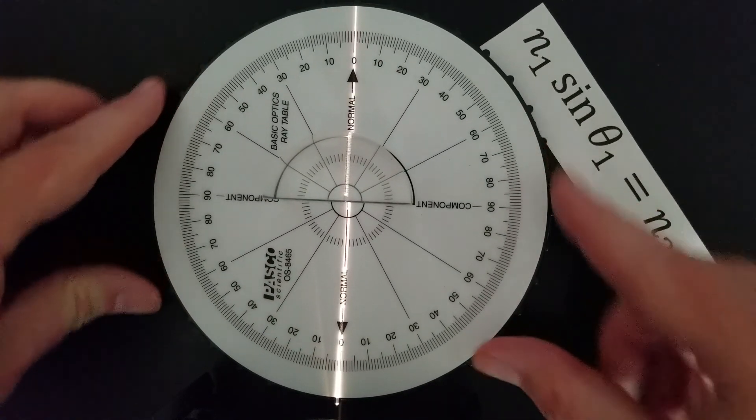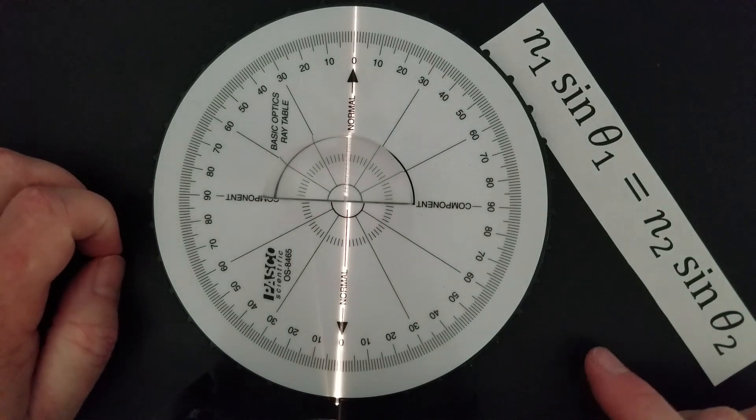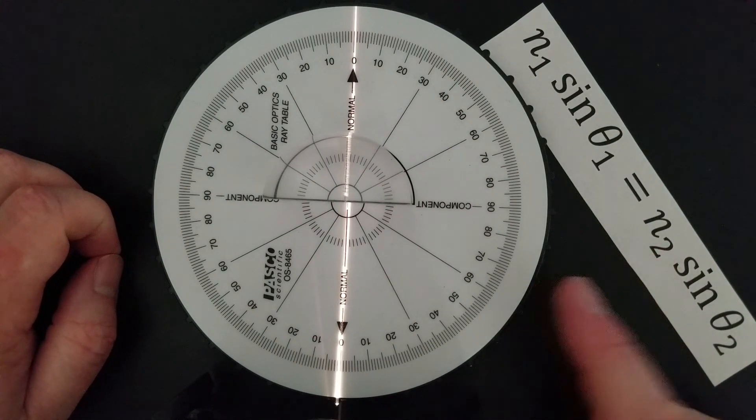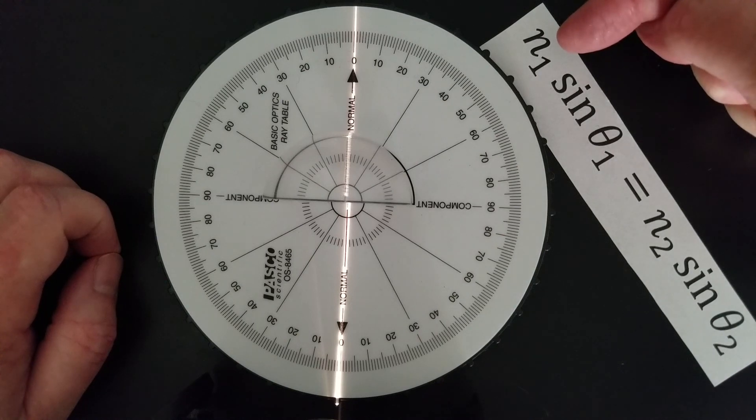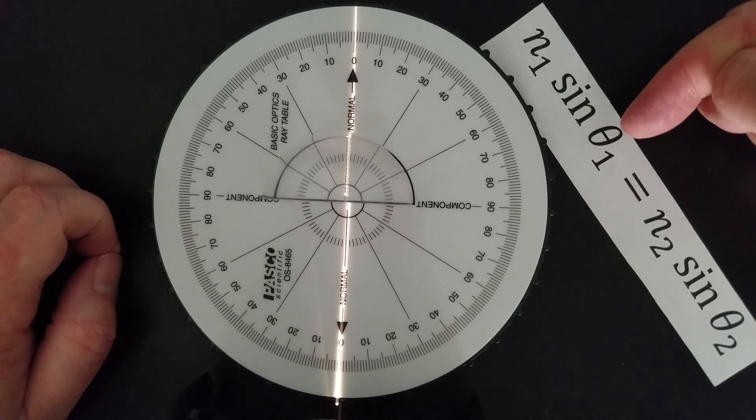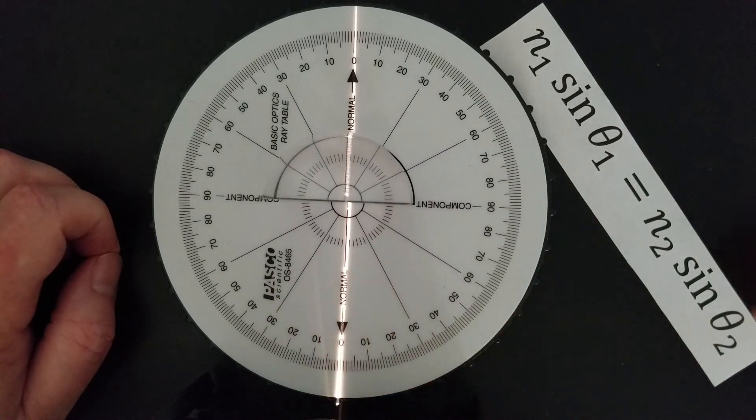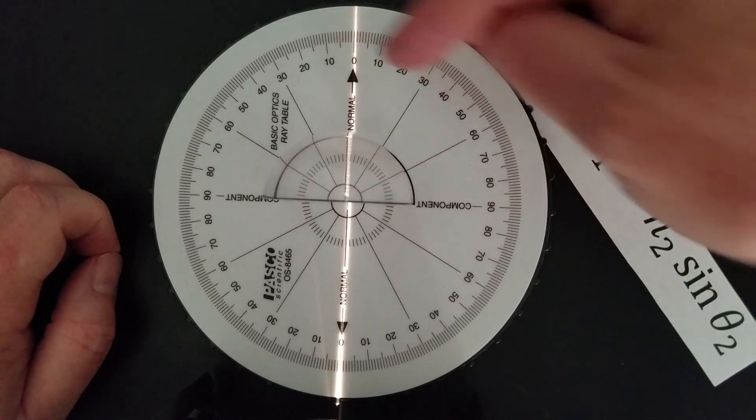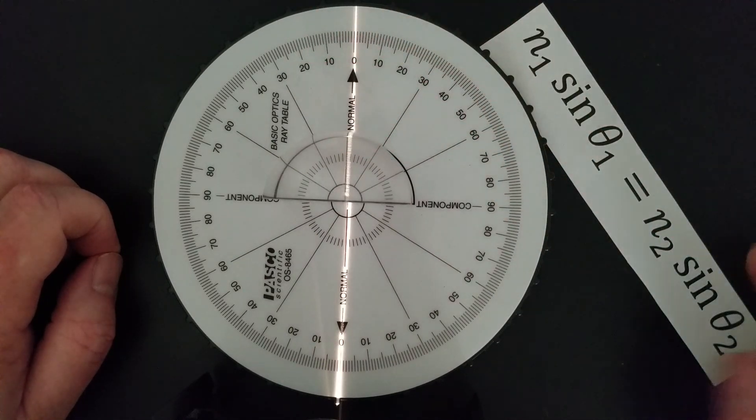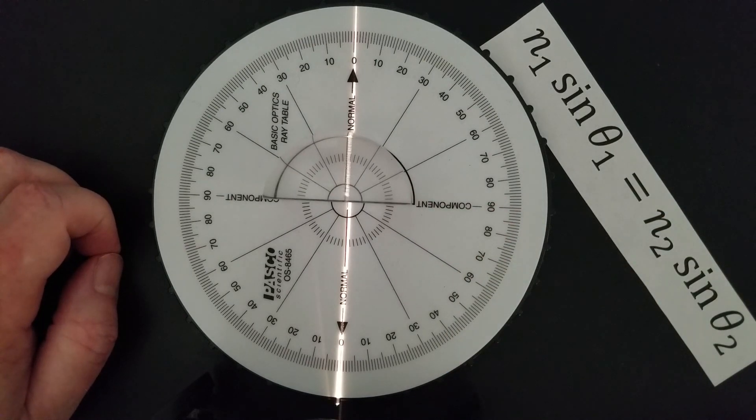Now, take your data and figure out the index of refraction of the plastic. Air is 1. Theta 1 is the angle on this side. Theta 2 is the angle of refraction, which is on this side. And determine the index of refraction of the solid. See what you get.